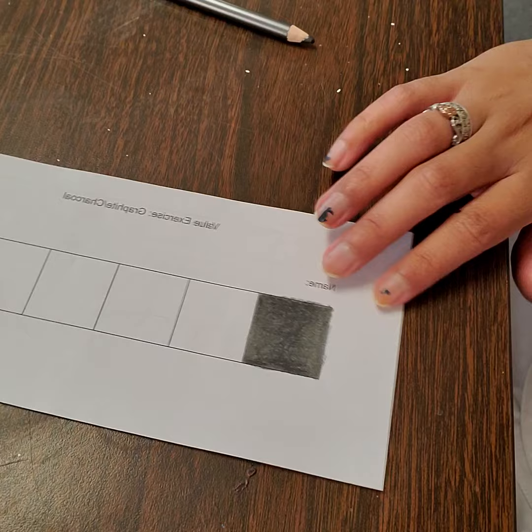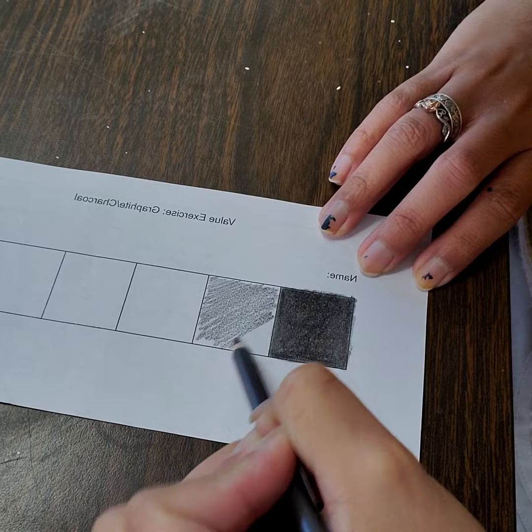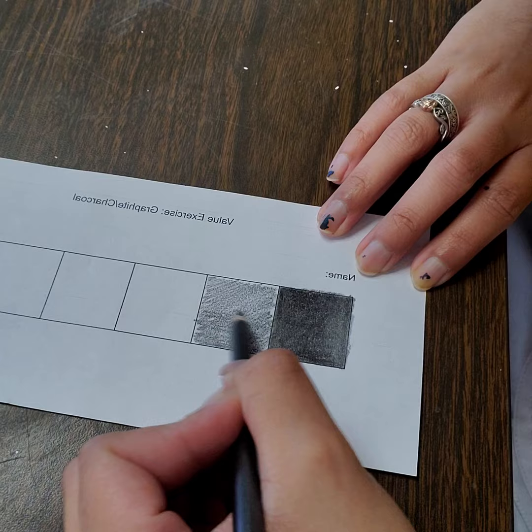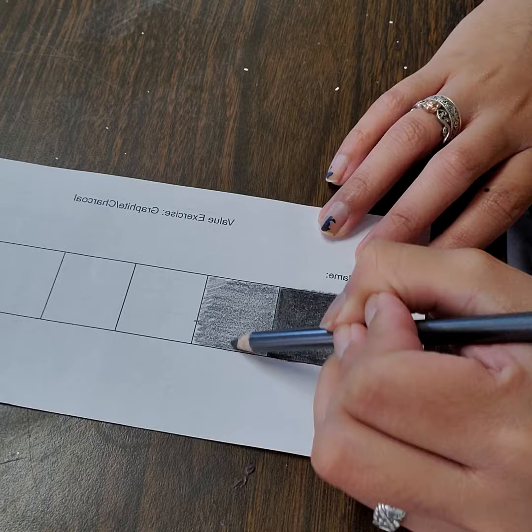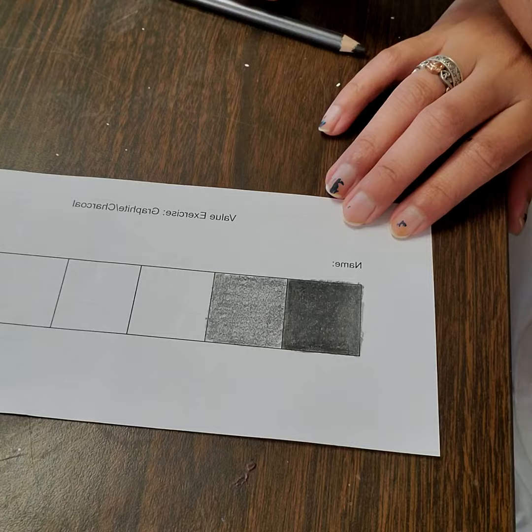The next square I'm going to create is going to be slightly lighter than this first one. So I'm going to apply some light pressure onto my pencil to fill it in, remembering that this has to be slightly less dark than the darkest square. So I'm not going to fill it in quite as dark. Once I am done filling this in, I'm going to go in with my blender.